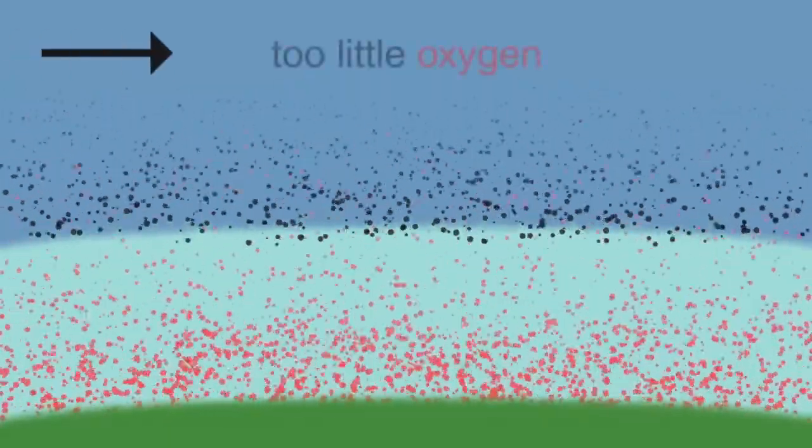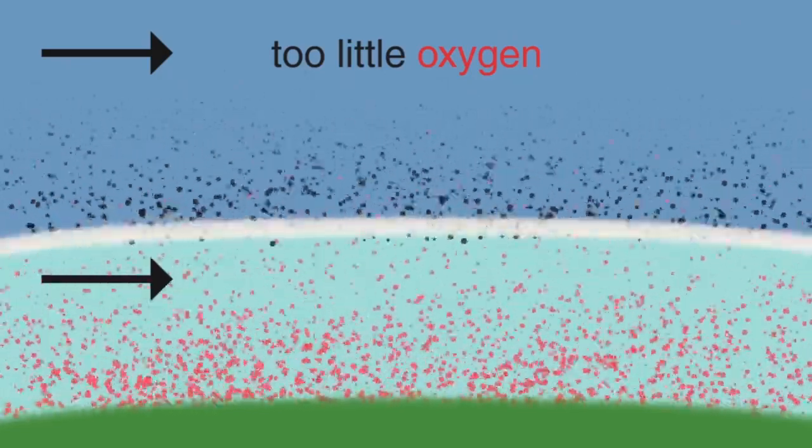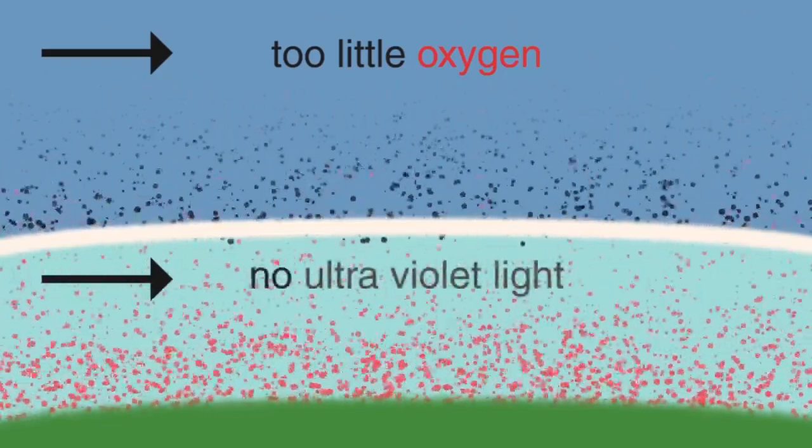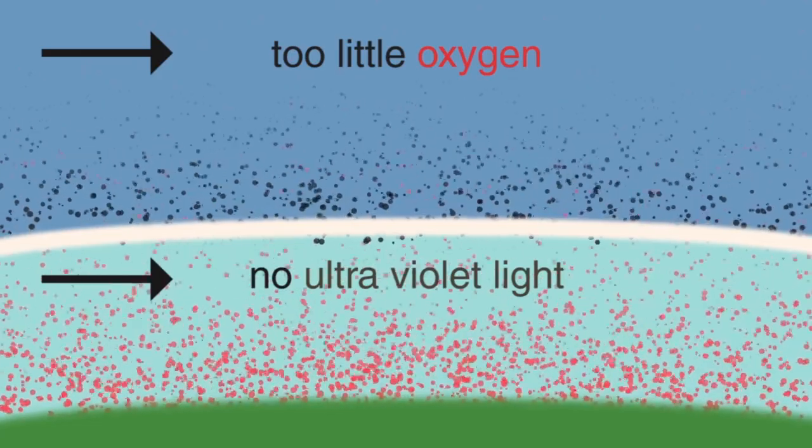Well, here there is too little oxygen, and here near the tropopause, the point of lowest temperature where the troposphere and the stratosphere join, there is no ultraviolet light available. It has all been absorbed by the ozone further out.